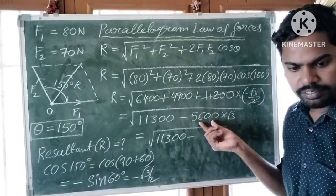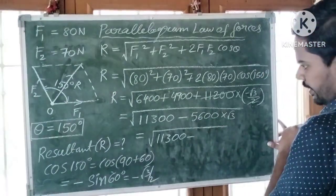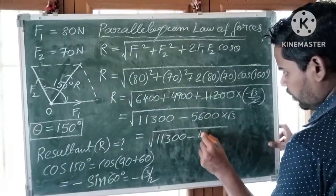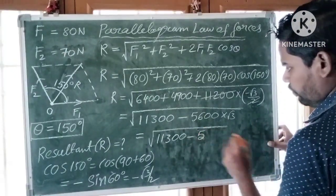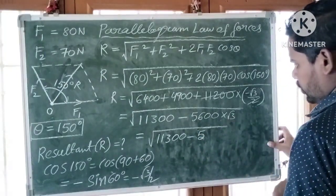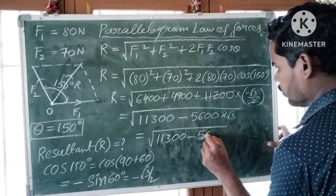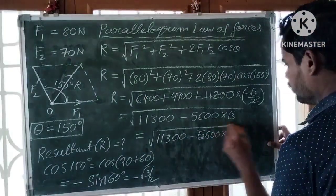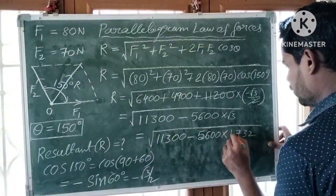If you calculate 5,600 into root 3, you will get approximately 9,700. Root 3 means 1.732, so 5,600 into 1.732.